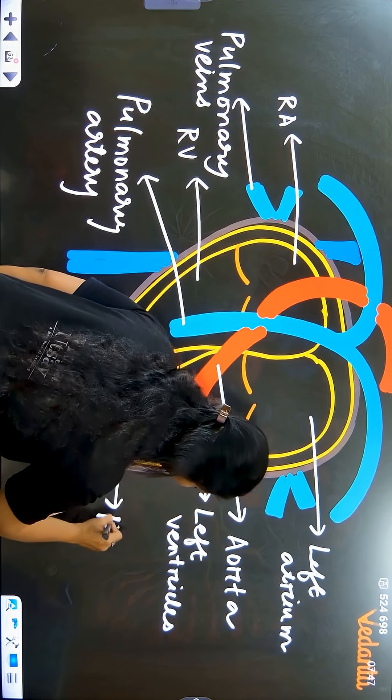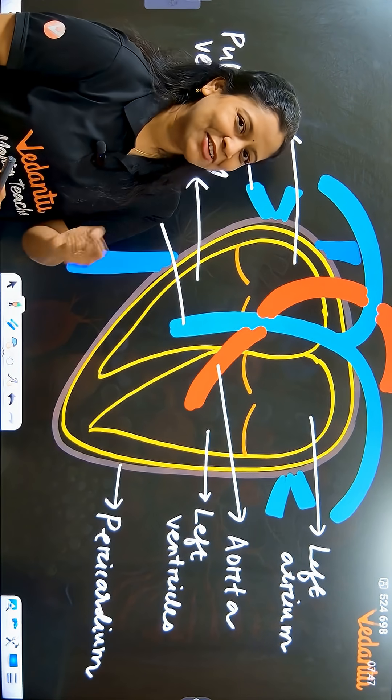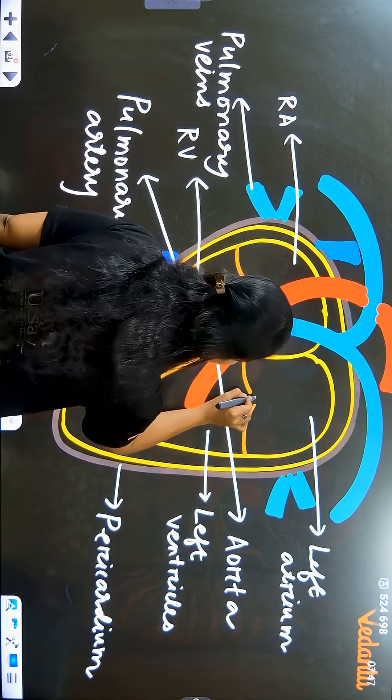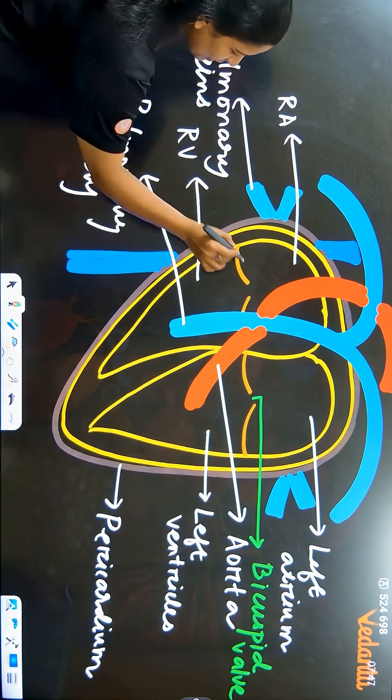This is the protective layer of heart which is pericardium. Now labeling bicuspid and tricuspid valves. Left side, we have bicuspid valve. And right side, tricuspid valve.